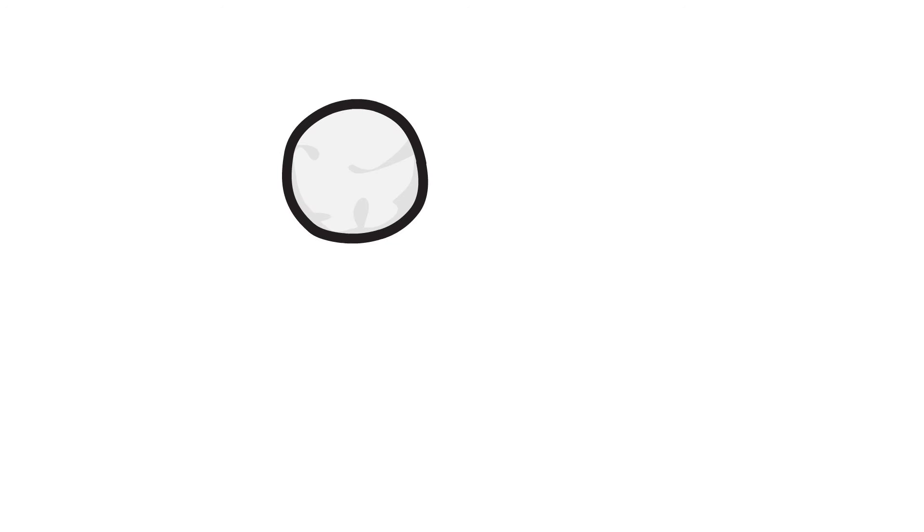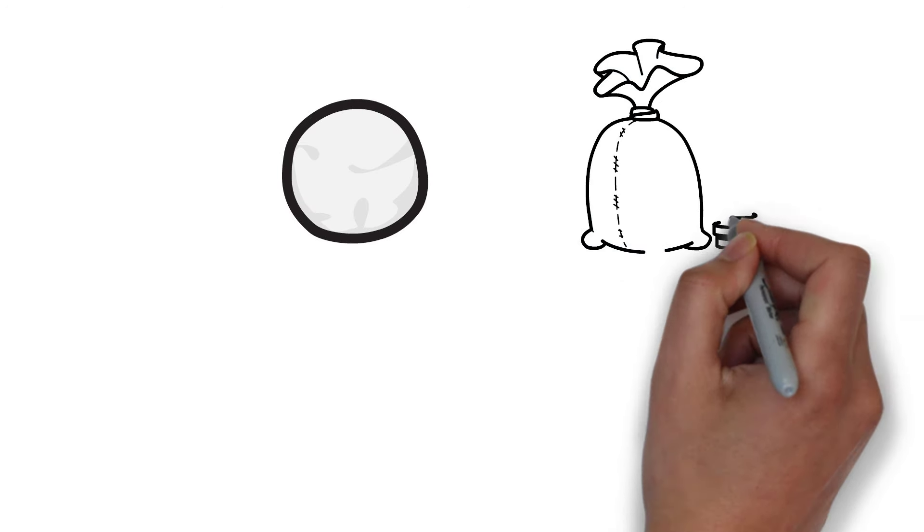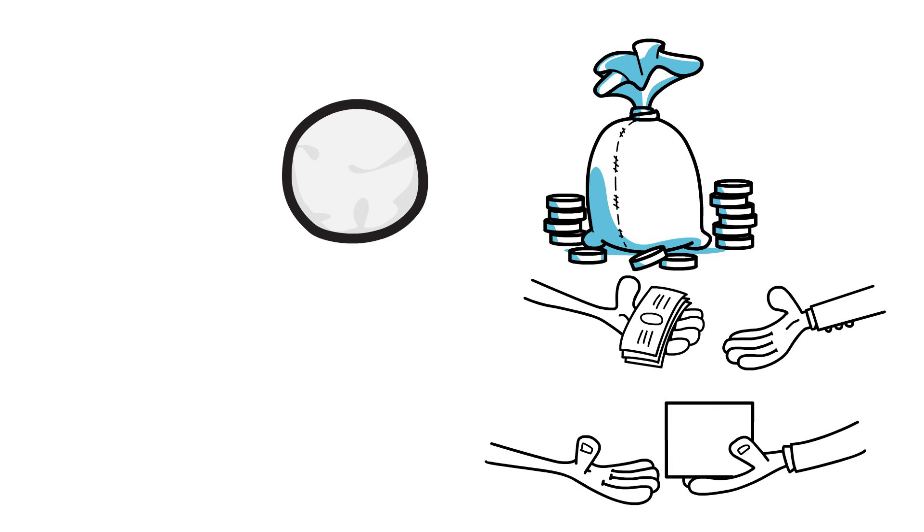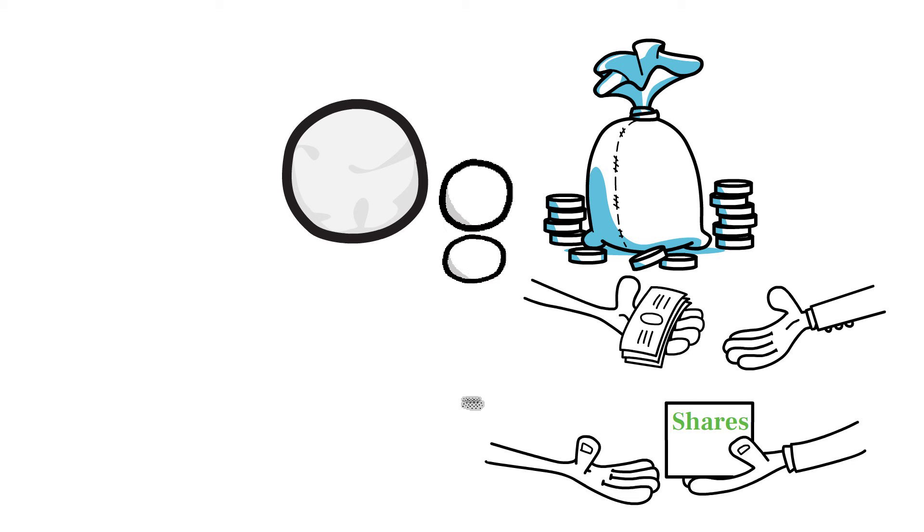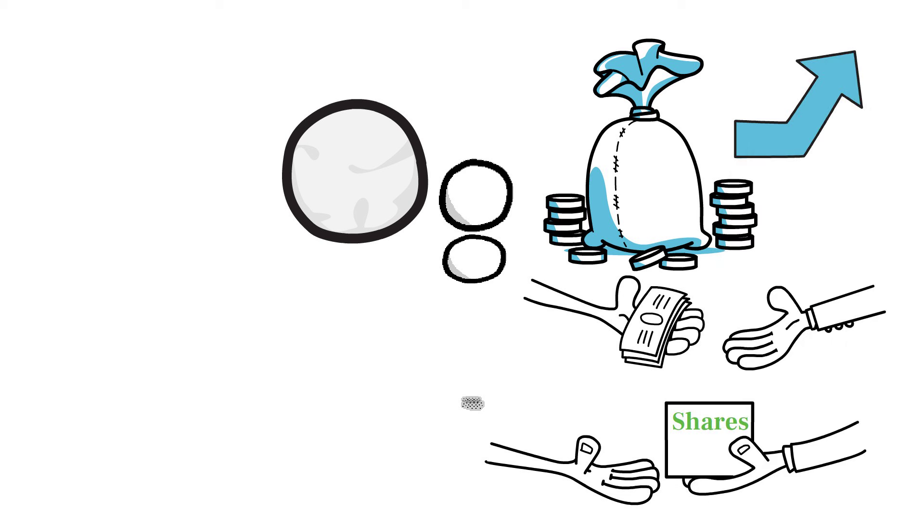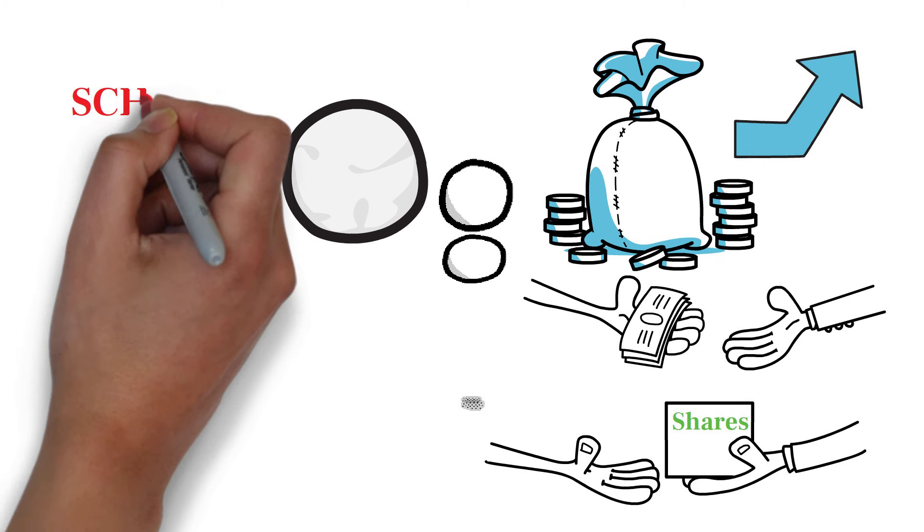And here's the best part. With the power of the dividend snowball effect, you don't need to invest a hefty amount to start living off dividends. By reinvesting your dividends, you can buy more shares, which in turn generate more dividends, creating a compounding effect that can significantly boost your income over time.